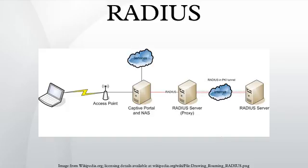Attribute value pairs: the RADIUS attribute value pairs carry data in both the request and the response for the authentication, authorization, and accounting transactions. The length of the RADIUS packet is used to determine the end of the AVPs. Vendor specific attributes: RADIUS is extensible. Many vendors of RADIUS hardware and software implement their own variants using vendor specific attributes. Microsoft has published some of their VSAs. VSA definitions from many other companies remain proprietary and/or ad hoc; nonetheless, many VSA dictionaries can be found by downloading source code of open source RADIUS implementations, e.g., FreeRADIUS or OpenRADIUS.